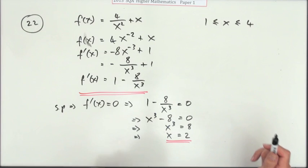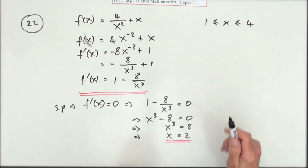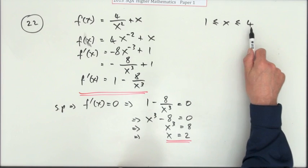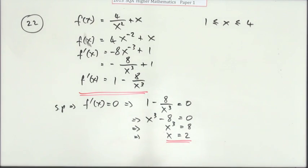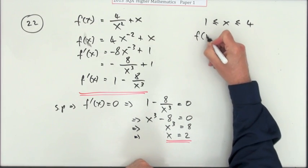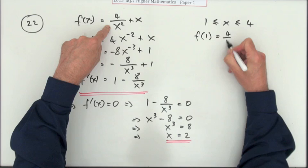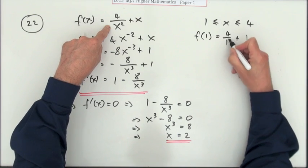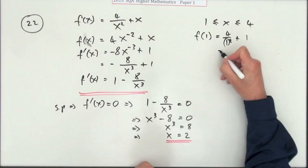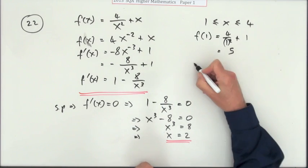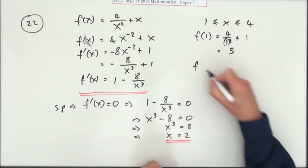Now I've got my three suspects. The maximum or minimum will either be at 1 or 4 or 2. So it's just a case of try them all. What's the value at 1? Put it into this: 4 over 1 squared plus 1, so that will be 4 plus 1, which is 5. So far that could be a maximum, it could be a minimum.